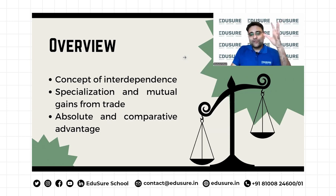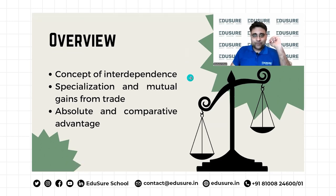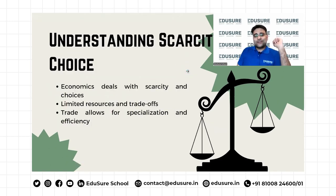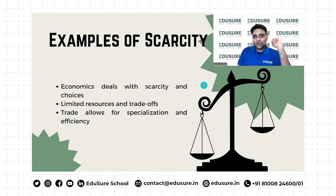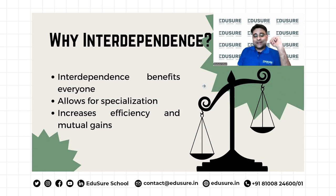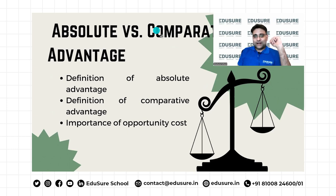Specialization and interdependence makes all of us better off — that is what we are going to establish in this class today. We have already understood that scarcity means choices are limited, and because of that, interdependence and specialization can actually lead to efficiency. Let's go ahead and understand the basic model of interdependence and trade.